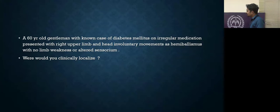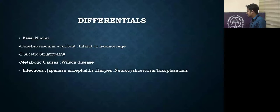I would clinically localize in the basal ganglia area. The differential diagnoses to consider: first in basal ganglia, we consider cerebrovascular accidents, any infarct or hemorrhage, or diabetic striatopathy. Metabolic and infectious causes we consider very rarely. Metabolic causes include Wilson disease, and infectious causes include Japanese encephalitis, herpes, neurocysticercosis, or toxoplasmosis.